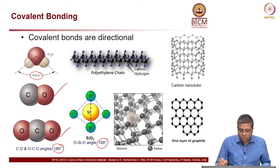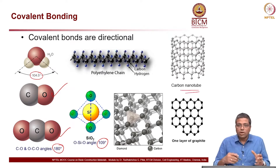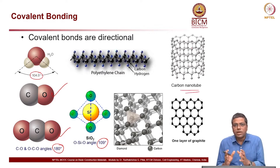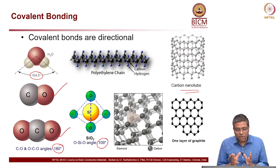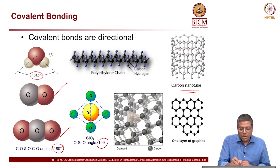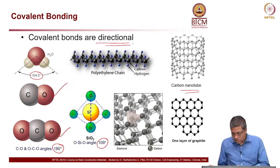You can also see the carbon nanotube as an example — it is all directional, very well organized atomic structure. That is what I am saying by meaning that covalent bonds are directional in nature, just some examples to show you.